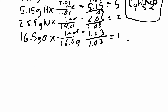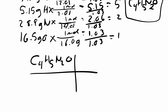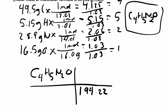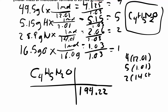Now we need to find the molecular formula. We have the empirical formula C4H5N2O, and they gave us the molar mass of the molecular formula: 194.22 grams per mole. To proceed, we find the molar mass of the empirical formula: 4 times 12.01, plus 5 times 1.01, plus 2 times 14.01, plus 16. That works out to about 97.